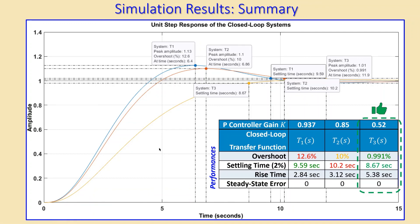That concludes example two on P-controller design using the root locus method, covering a third order system. If you have questions or comments, please let me know and I'll answer as soon as possible. Thanks for your attention — see you next time and take care.